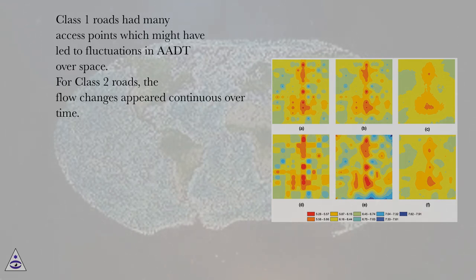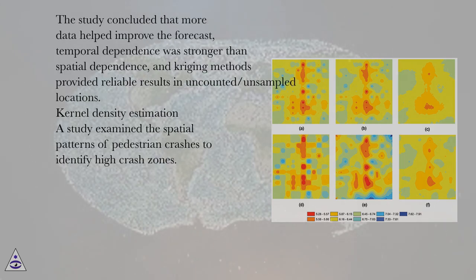For class II roads, the flow changes appeared continuous over time. The study concluded that more data helped improve the forecast, temporal dependence was stronger than spatial dependence, and kriging methods provided reliable results in uncounted or unsampled locations.